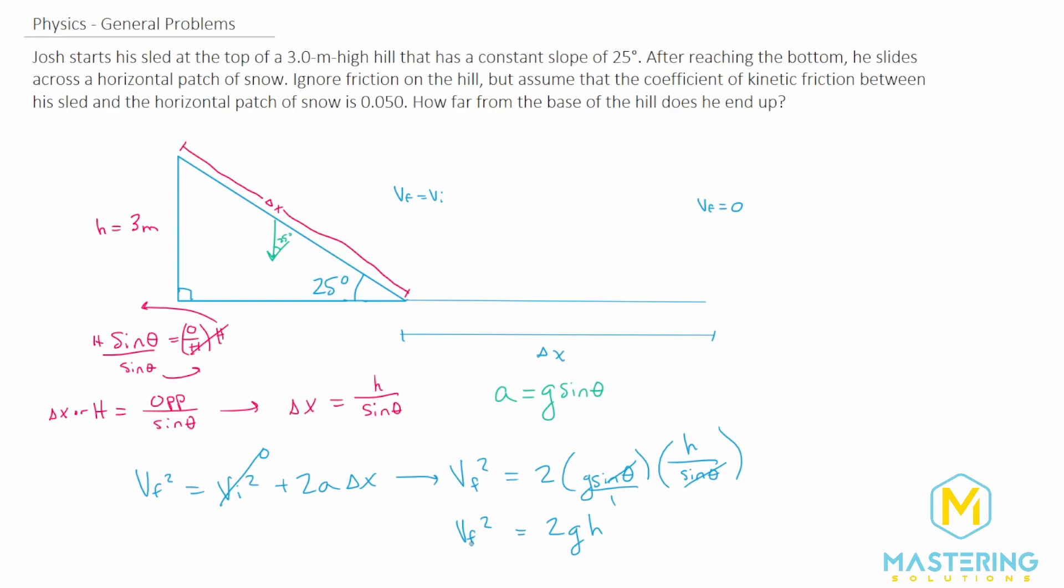Now we would solve this, but let's hold on to that right there, you'll see in just a second, it's easier if we just leave it as v final squared. So let's come up here. And now we're looking at the bottom of the hill.